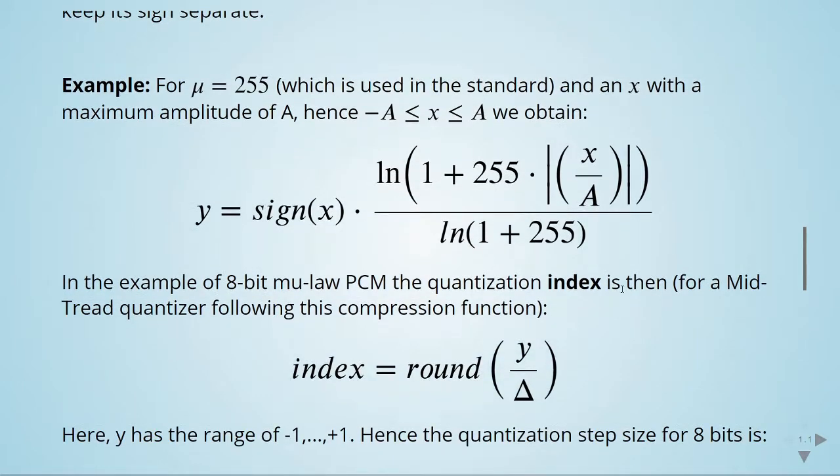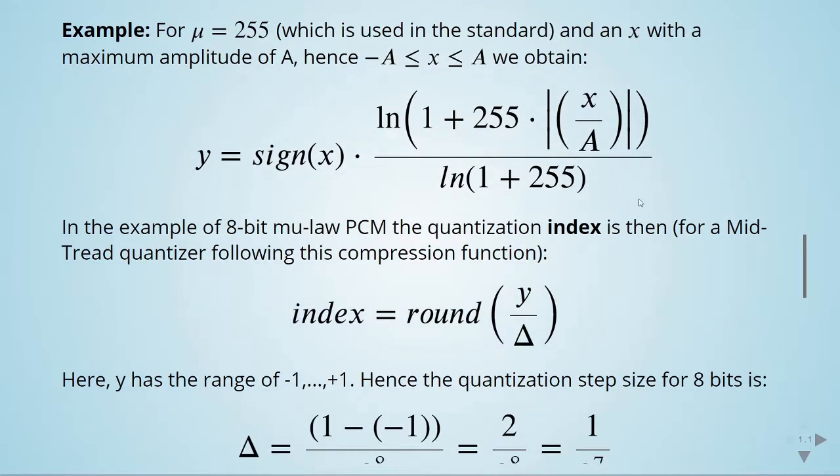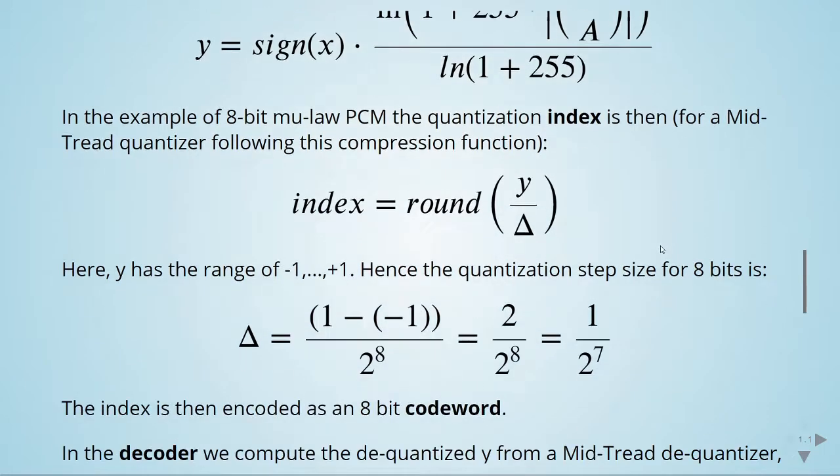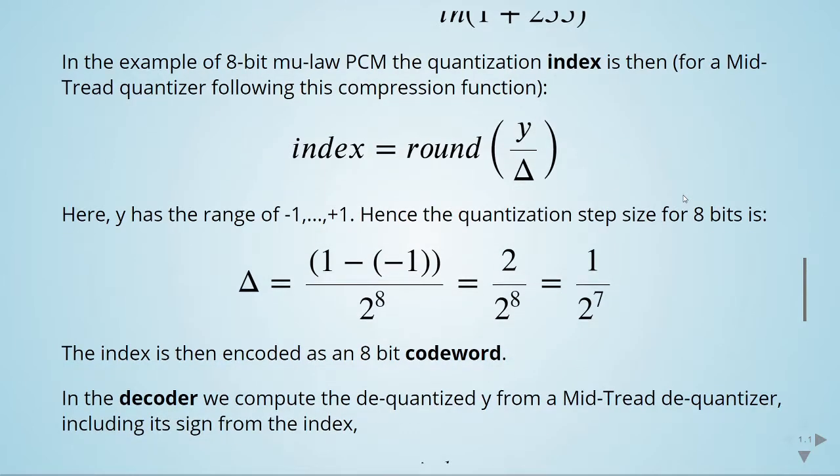This is an example of 8-bit mu law. We have the quantization index, so we are rounding. This is the mid-tread quantizer, like we have seen before. Here y has the range of minus 1 to plus 1, so it is normalized. The quantization step size for 8-bits is this, and then this index is then encoded as an 8-bit codeword.